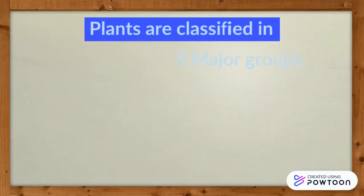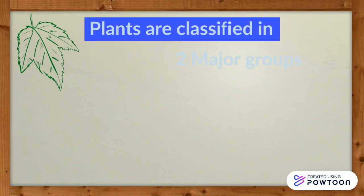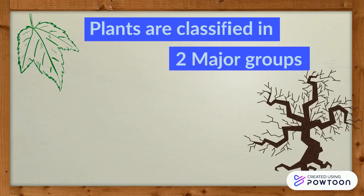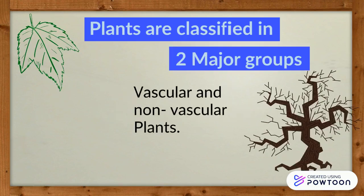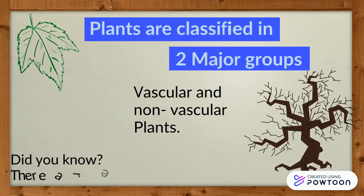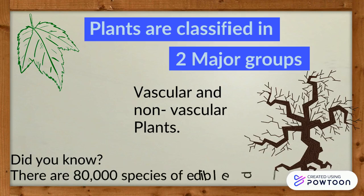Plants are classified in two major groups: vascular and non-vascular plants. Did you know there are 80,000 species of edible plants?